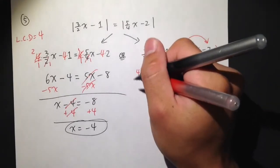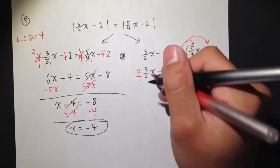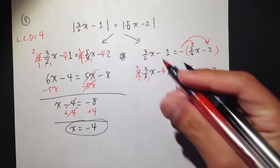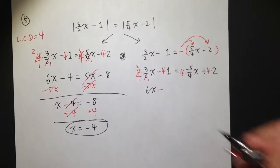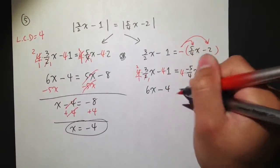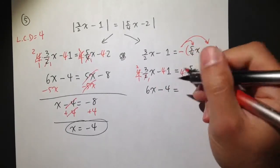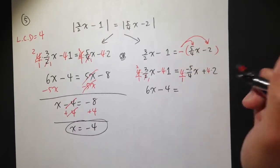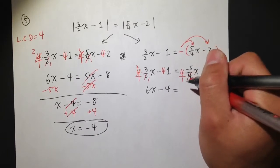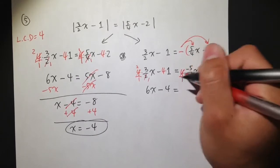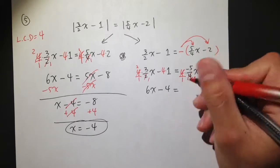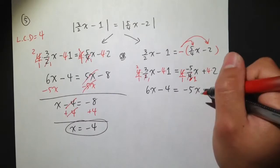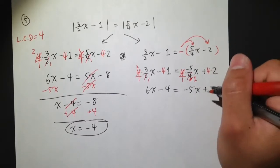So, 4 is 4 over 1, and we can cross-cancel. This is 1, this is 2. 2 times 3 is 6x, minus 4 times 1 is 4. That's equal to, let's look at 4 as 4 over 1, and the 4 cancels. And we have negative 5 here, so this is negative 5x, plus 4 times 2 is 8.